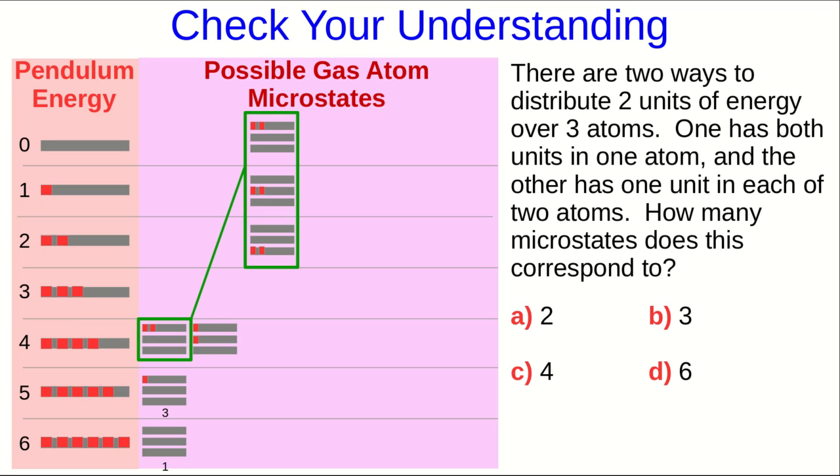With the other possibility, where that energy is shared between two atoms, again there are three possibilities. The easy way to think of it is, which is the atom that doesn't get a unit? Well, there are three ways to choose. And so overall, there are six microstates corresponding to this macrostate.